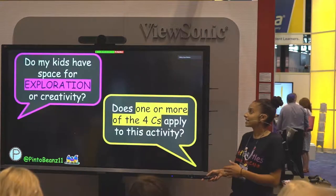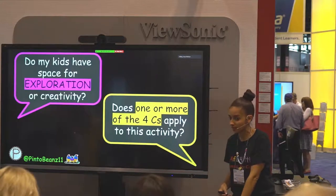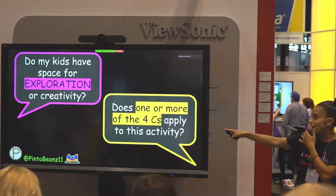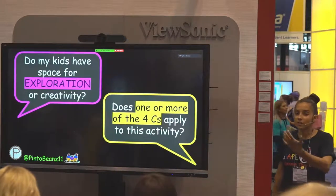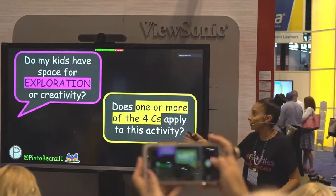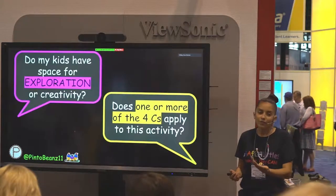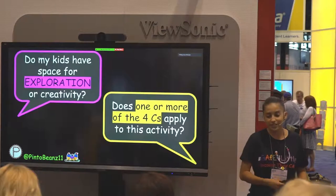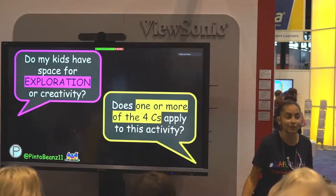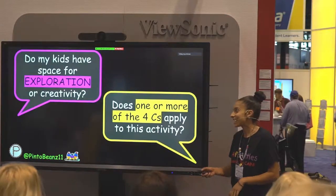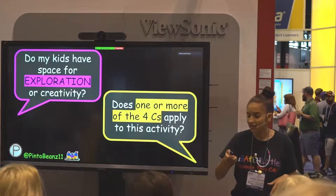The mindset behind this activity is: do the kids have space for exploration, or am I just giving them something and telling them to do it? What connections can they make to it? Is one or more of the Four C's applied? In this one, it's creativity. But also, if you ask the kids why they put what they placed where they placed it, then they can explain what's going on in their head. I had a kid tell me he put three princesses next to three castles so the princesses could be next-door neighbors and visit each other if they were bored. I wouldn't have known that had I not asked.